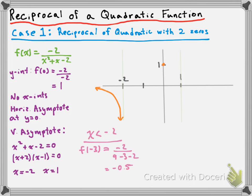Next, we look at the middle interval. We already have a point there — our y-intercept — so we know the function is positive there. It has to approach the two vertical asymptotes. One thing to note: the reciprocal of a quadratic shares an axis of symmetry with the quadratic in its denominator. The quadratic has x-intercepts at negative two and one, so averaging those gives an axis of symmetry at x equals negative 0.5. Our middle section is symmetrical about that.